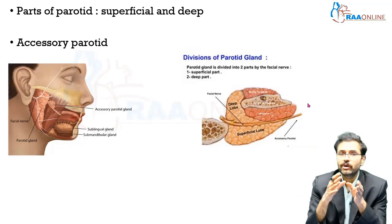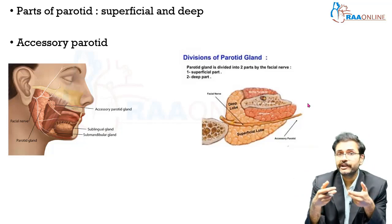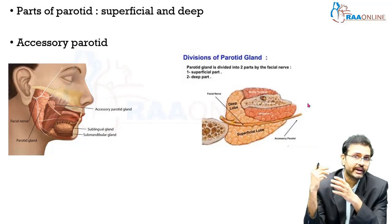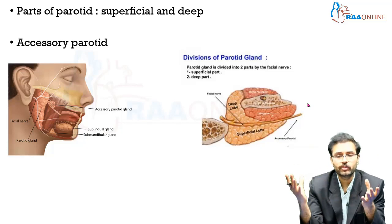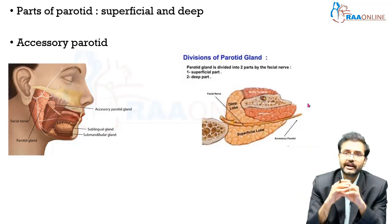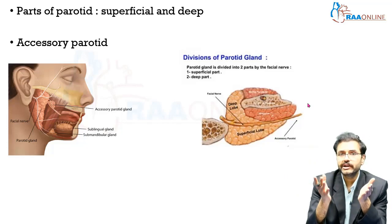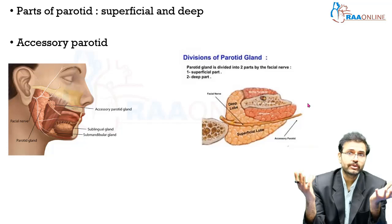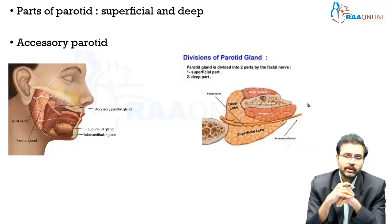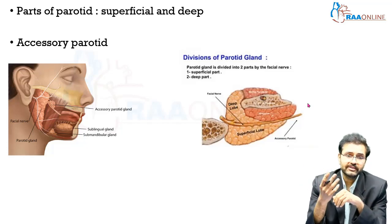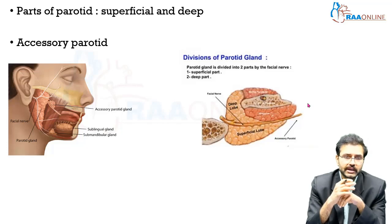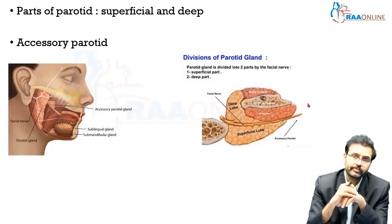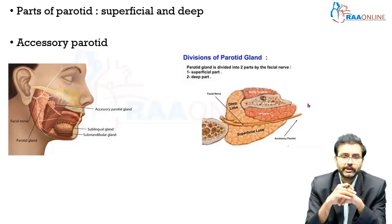Certain lesions involving the superficial lobe become apparent very quickly, whereas deep lobe lesions may not become apparent because they tend to grow inwards rather than outwards. You can also have what is called an accessory parotid gland, which is located as an outward extension of the parotid gland itself in close relation to the parotid duct.